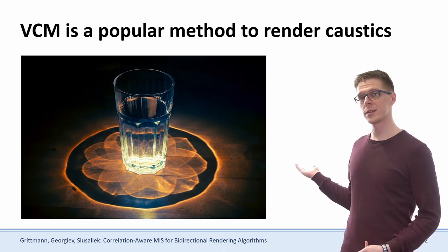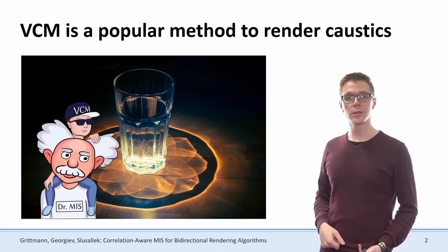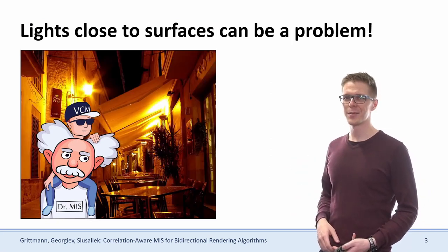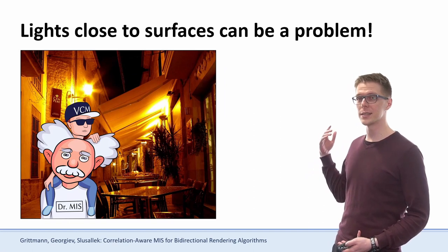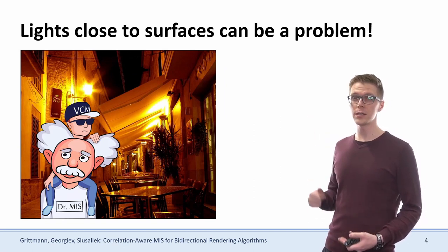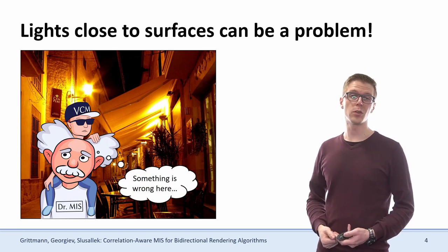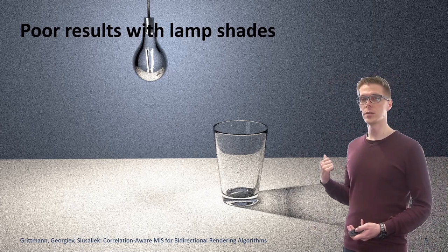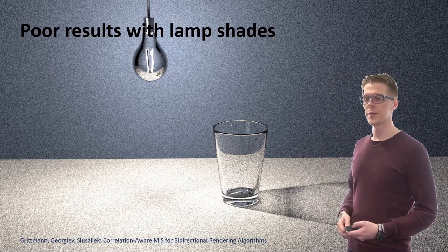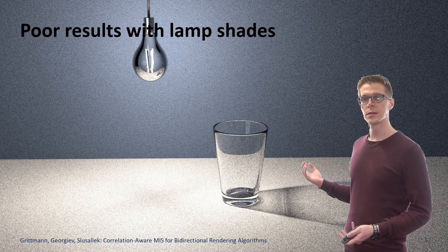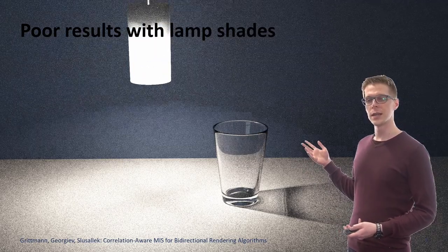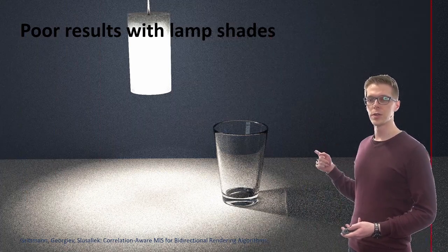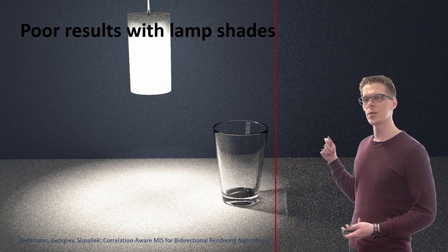Look at this shiny caustic. How can we render something like that? Well, we could use the VCM algorithm, which relies heavily on MIS. But what if our scene also contains lights close to surfaces? Then MIS with VCM might actually not work all that well for you. This scene is rendered with just 32 samples per pixel with VCM, and we get a rather nice result. But if you add a lampshade, then a lot of extra noise appears here on the table and on the wall. And with our heuristic, you can get rid of all of this extra noise.